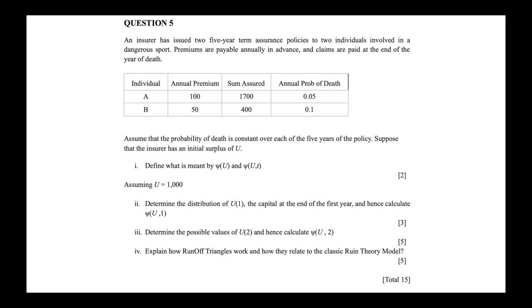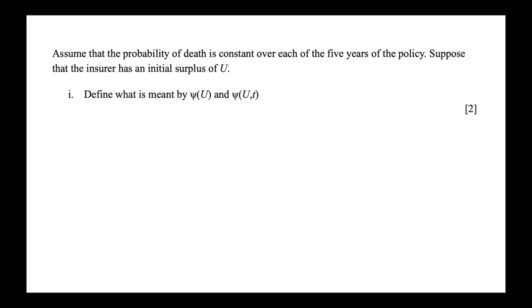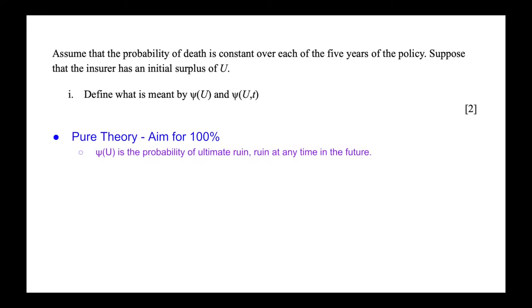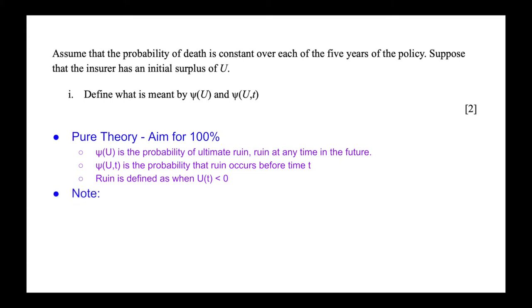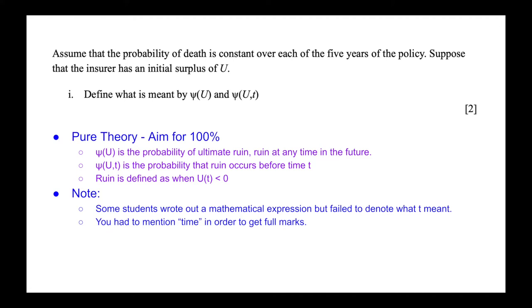The first part asks us to define what is meant by φ(u) and φ(u,t). This is pure theory, so you want to aim for 100%. φ(u) is the probability of ultimate ruin — ruin at any time in the future. φ(u,t) is the probability that ruin occurs before time t, where ruin is defined as when the surplus at any time is less than zero. Be sure to include the word 'time' when defining t, as students who only write a mathematical expression without clarifying that t means time do not get full marks.